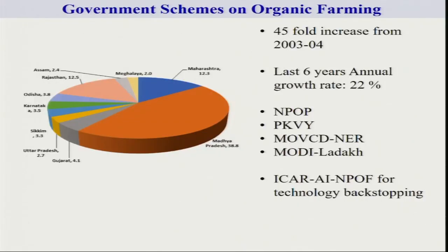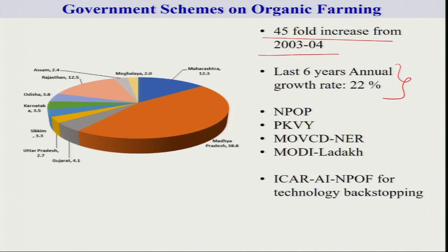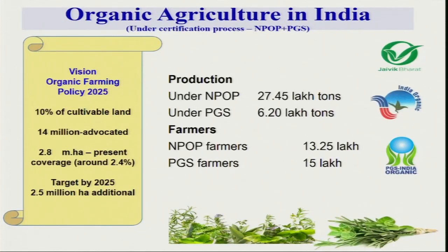Our government of India has started several agricultural schemes over the last two decades. Our total organic area and production has been enhanced many fold — 45-fold increase from 2003-04 to 2021. Our growth rate is very high — more than 22 percent per year over the last 6 years. Government policies have played a very major role in promoting organic farming. There are lots of schemes — NPOP, PKVY, MOVCD, and different ICAR and NCOF technologies. The Organic Vision Policy 2035 has set a target to convert 10 percent of India's agricultural land — about 14 million hectares — to organic, with a near-term target of adding 2.5 million hectares by 2025.